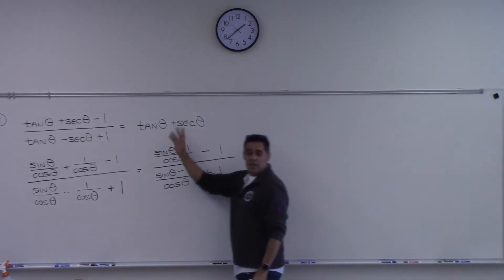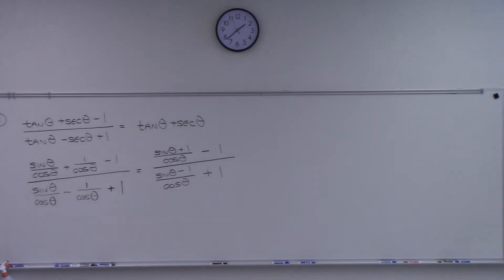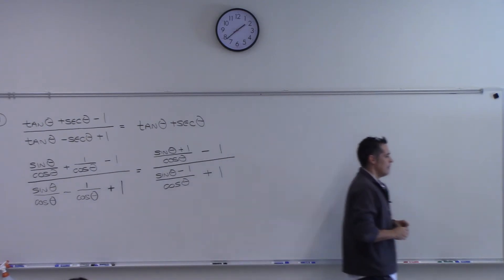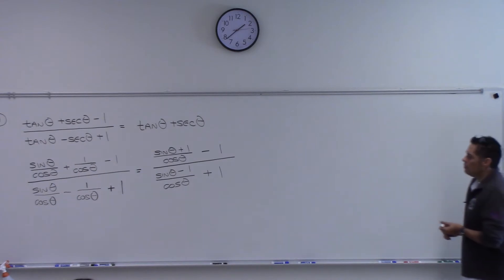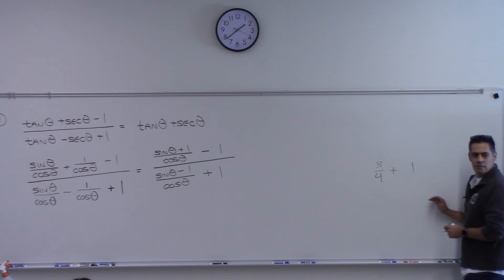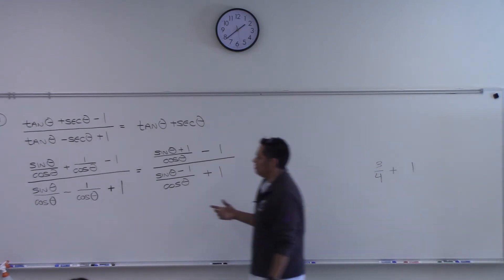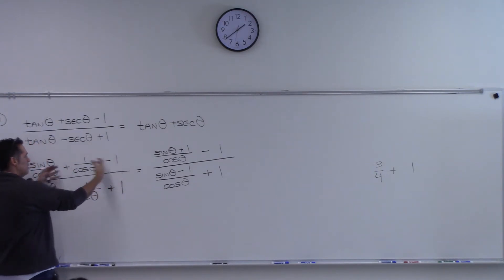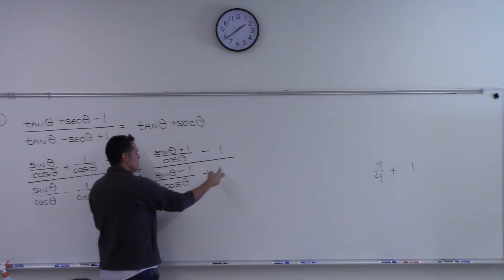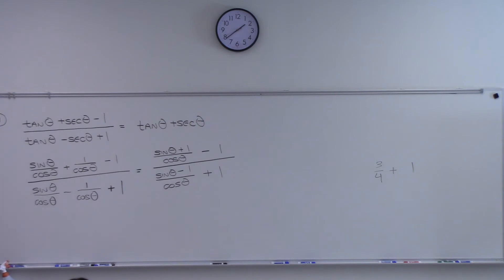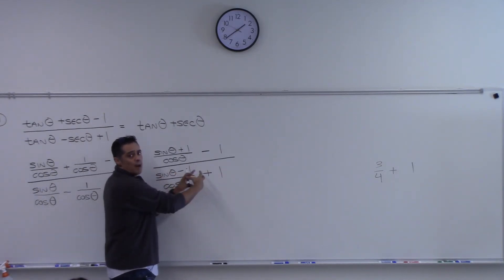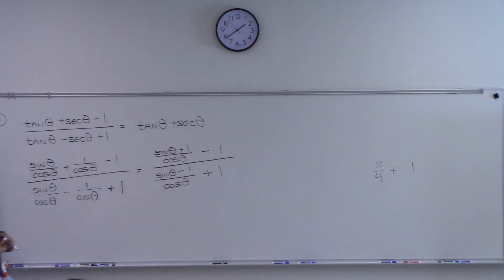We're trying to get to the right-hand side, which has tangent and secant in it. I can't flip until everything is together into one fraction. Just like with three-fourths plus one — I'd rewrite the one as four over four to get a common denominator. Similarly, I could rewrite the minus one as minus cosine over cosine, and the plus one as cosine over cosine, then put them all together.